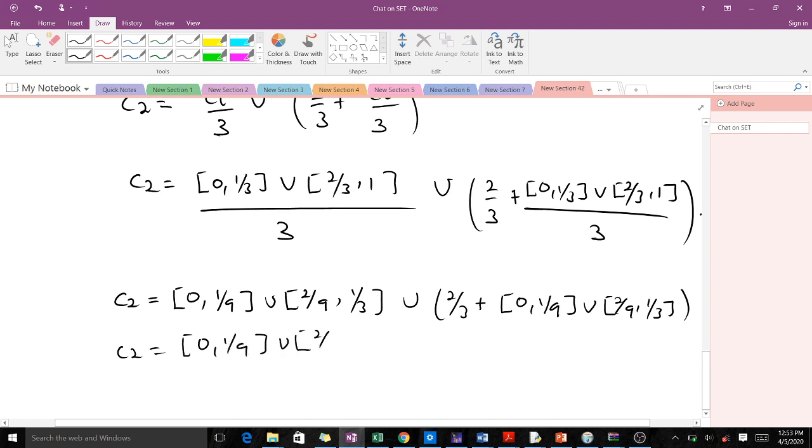When you get here, 0 + 2/3 is 2/3, then we have 2/3 + 1/9 which is 7/9. Then union 2/3 + 2/9 which is 8/9.